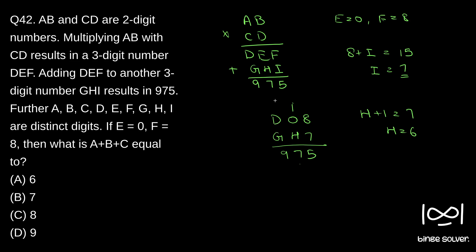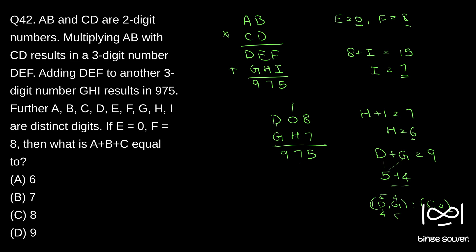Now, D plus G — there is no carryover — so D plus G is 9. D plus G is 9 means: if D or G is 9, then the other number has to be 0, but since E is already 0 and all digits are distinct, D and G cannot be 0. D and G cannot be 9, and already 8 is taken by F, 7 is taken by I, 6 is taken by H. So the only possible combination is 5 plus 4. D and G have to be 5 and 4 in some order.